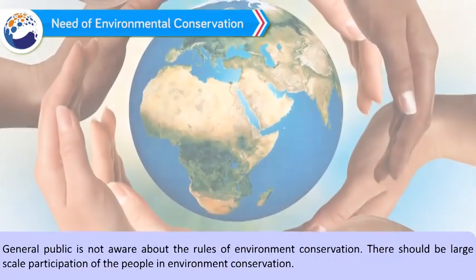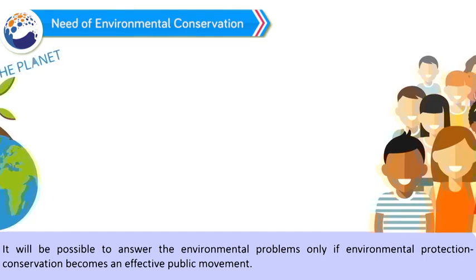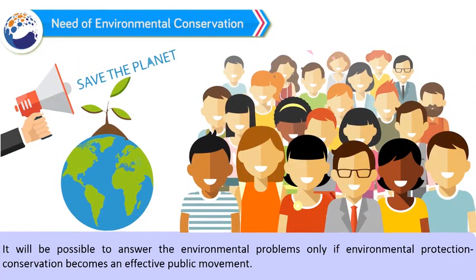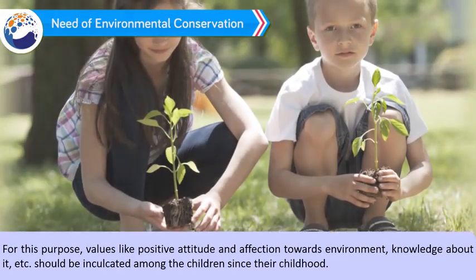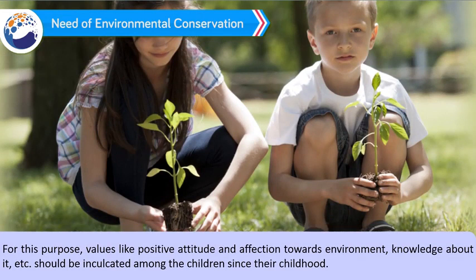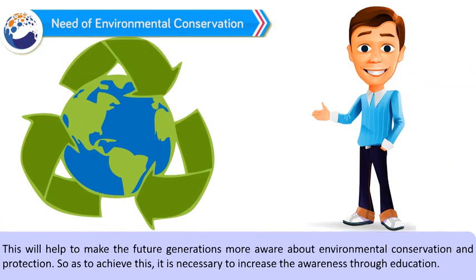Need of Environmental Conservation: General public is not aware about the rules of environmental conservation. There should be large-scale participation of people in environment conservation. It will be possible to answer environmental problems only if environmental protection and conservation becomes an effective public movement. For this purpose, values like positive attitude and affection towards environment, and knowledge about it, should be inculcated among children since their childhood. This will help make future generations more aware about environmental conservation and protection. It is necessary to increase awareness through education.